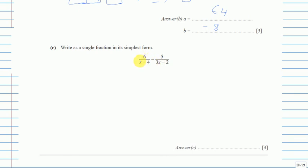6 doesn't have the denominator (3x - 2), so we multiply by (3x - 2), but we cannot multiply only the denominator—we have to multiply the numerator also to balance the fraction. Same thing with the 5.